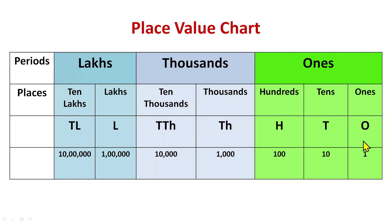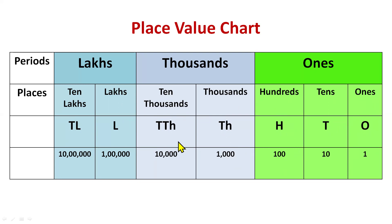Now in numerals: we write ones as 1, tens as 10, for hundreds we write 100 (two zeros), thousands three zeros, ten thousands four zeros, lakh five zeros, ten lakhs six zeros.